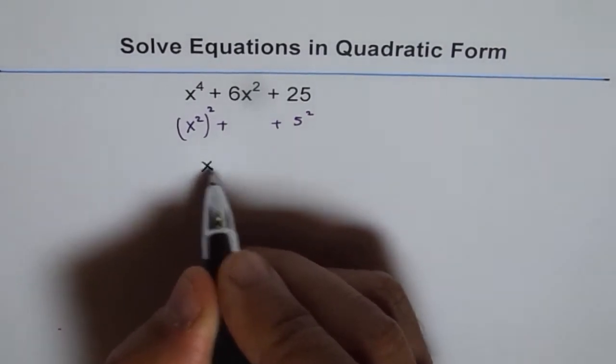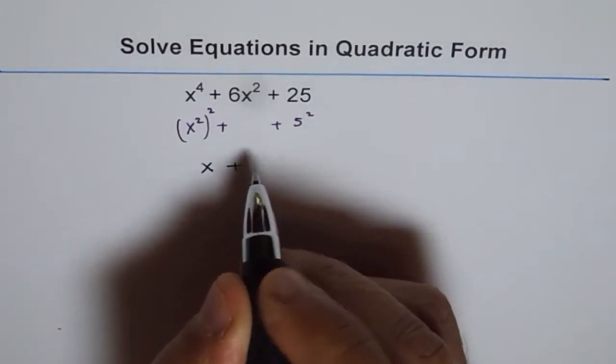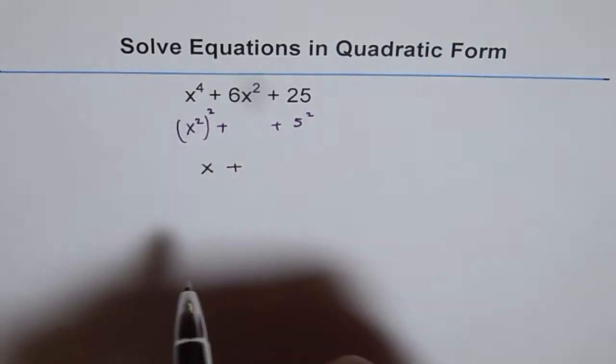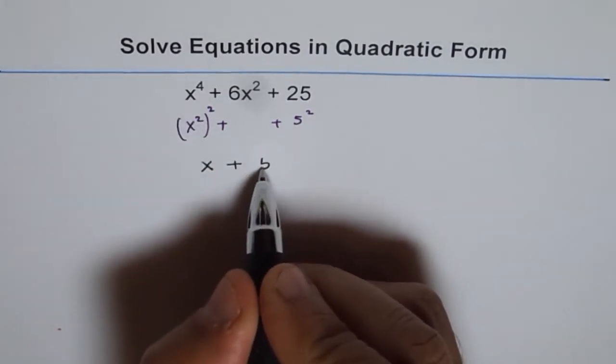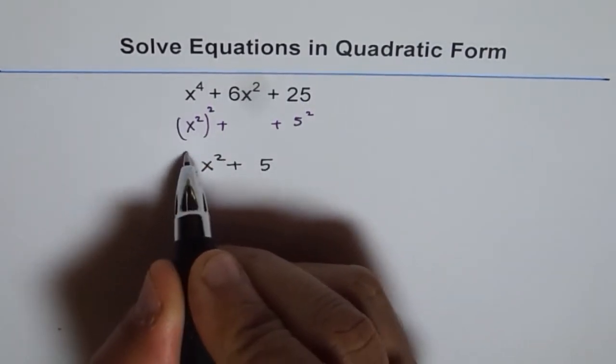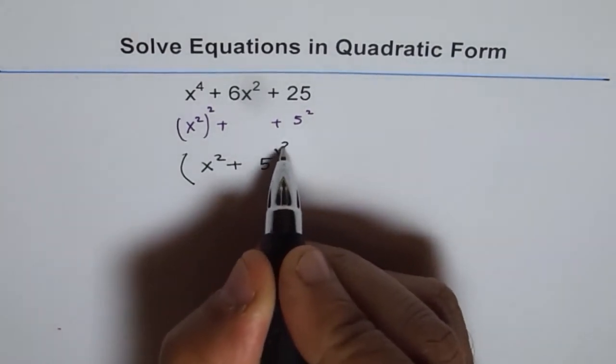Say, x plus 5, rather, x^2 plus 5, because we have degree 4 here, right? What is (x^2 + 5)^2?